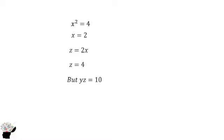But we also know that yz is equal to 10 from equation 1. So we already know z, so we should be able to find y. So y into bracket 4 is equal to 10. So we are going to get y is equal to 5 over 2.